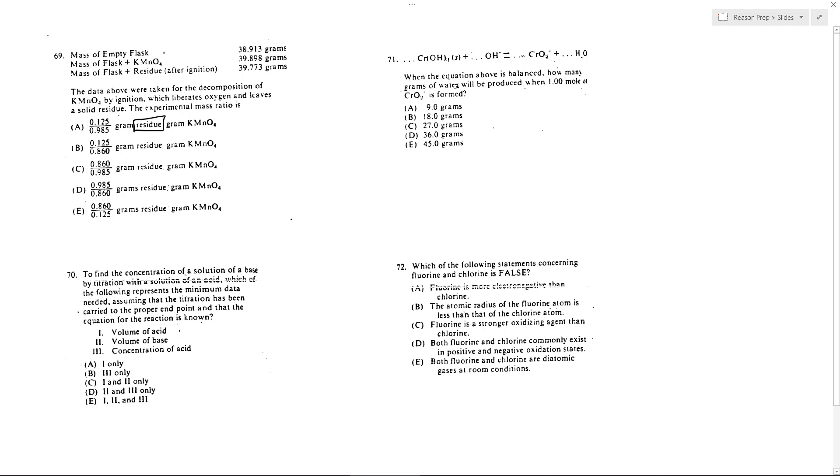So we know this thing when it's empty has a mass of 38.913. So when we add the KMnO4 to the mass, we get a higher mass. And so if we subtract these, we'll be able to find what is the mass of the KMnO4 added. So doing a little bit of subtractions here. So I get 0.985 grams of KMnO4. So that is the total that I start with before I do the heating, before I burn it.